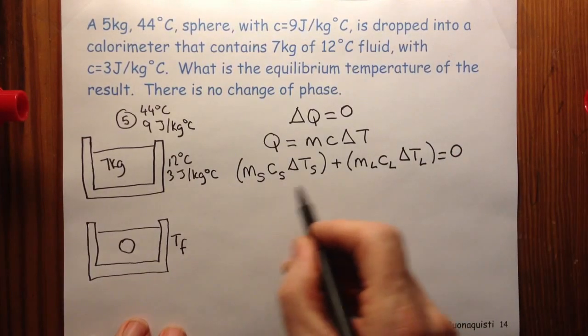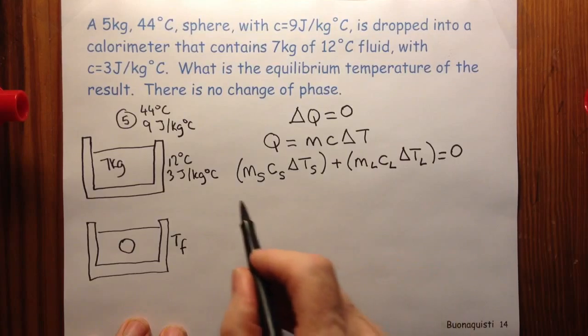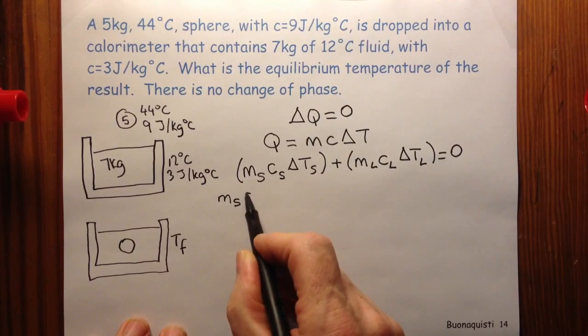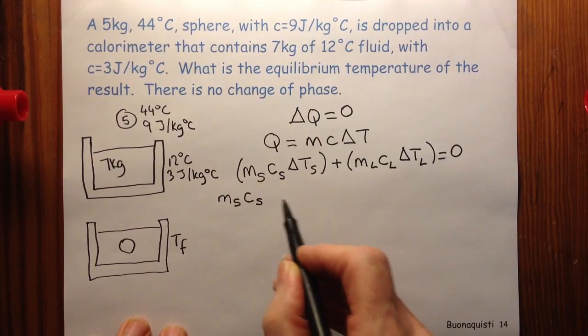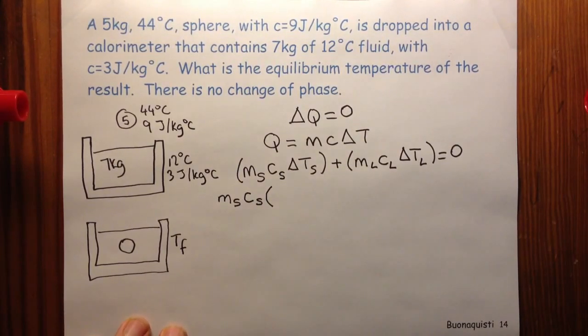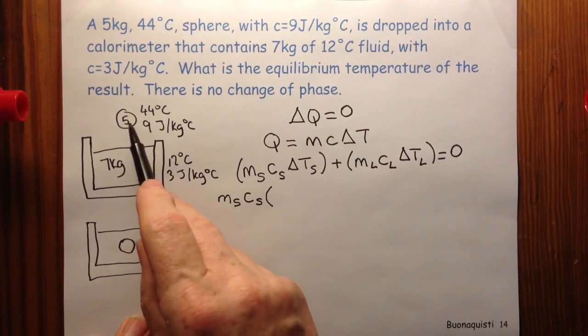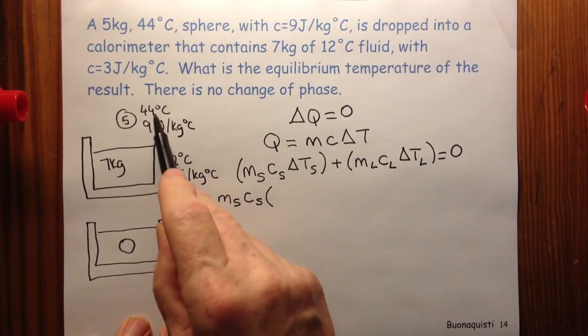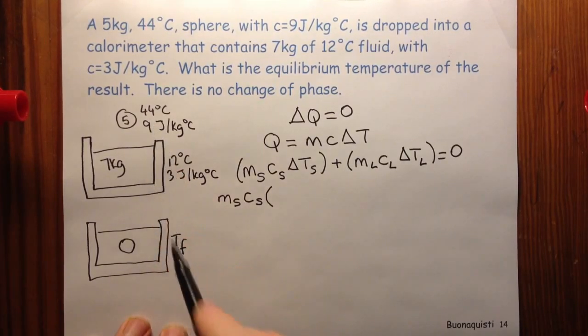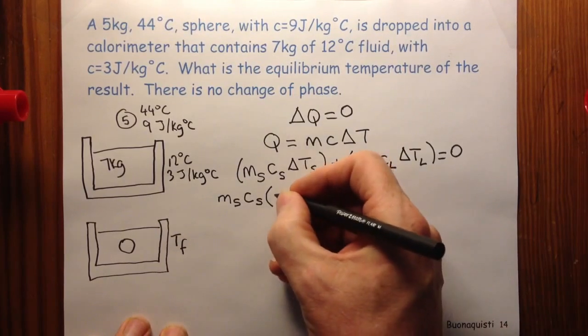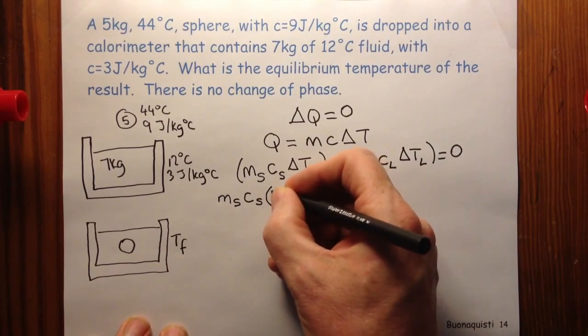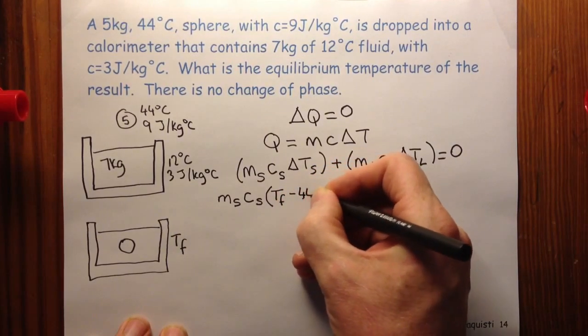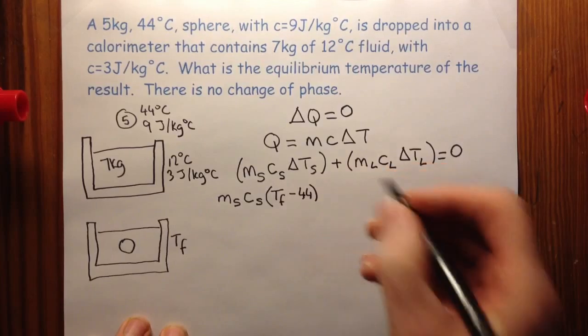So if I expand these temperature changes, I have the mass of the solid times the specific heat of the solid and the temperature change for the solid. It starts off at high temperature and it ends up at T final. In fact, it starts at 44 and it ends at T final. And I put these things down, the final temperature minus the initial. So I'm going to say T final minus 44. So that's my first term.